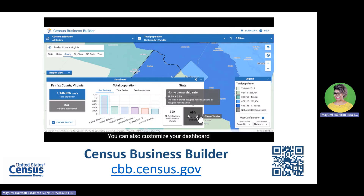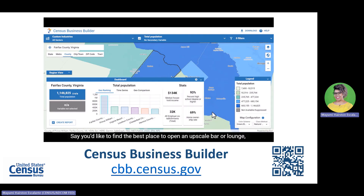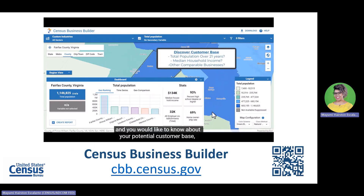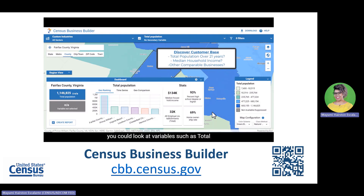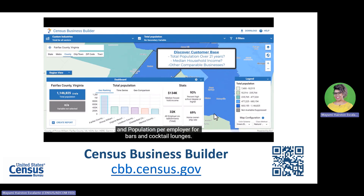You can also customize your dashboard to display the information relevant to your business need. Say you'd like to find the best place to open an upscale bar or lounge and you'd like to know about your potential customer base. You might want to focus on variables such as total population over 21 years and median household income, as well as total number of employers and non-employers, average payroll per employee, and population per employer for bars and cocktail lounges.